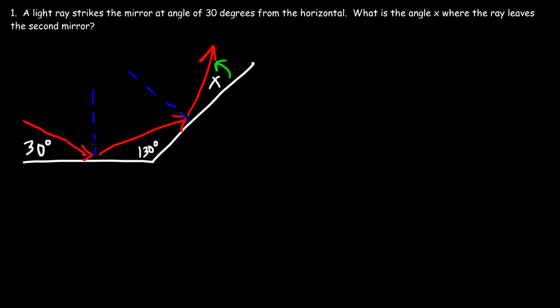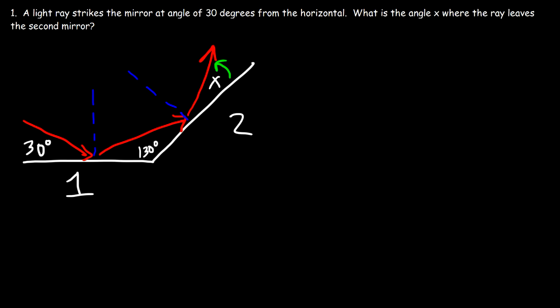Now let's work on this problem: a light ray strikes the mirror at an angle of 30 degrees from the horizontal. What is the angle X where the ray leaves the second mirror? Here this is the first mirror and this is the second mirror, and this is the incident ray.